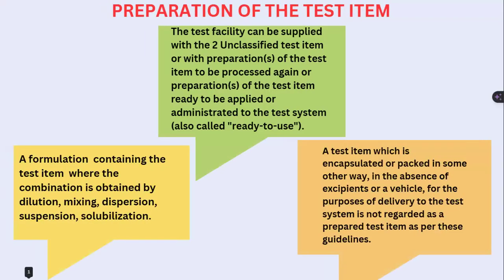Regarding preparation of the test item, a test facility can be supplied with either unclassified test items to be processed, or preparations ready to apply or use. Two types of preparations are generated: first, a formulation containing the test item where combination is obtained by dilution, mixing, dispersion, suspension, or solubilization; second, a test item encapsulated or packed in other ways in the absence of excipients or vehicles. This second type is not considered a prepared test item as per the guidelines.